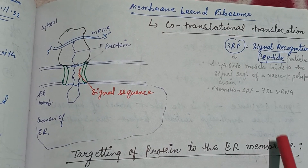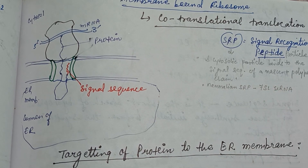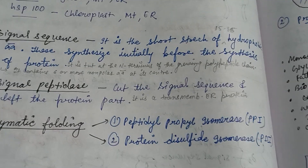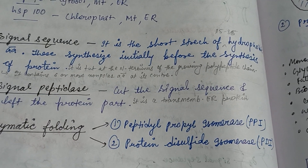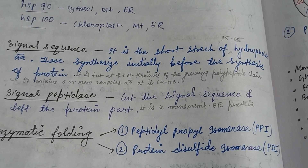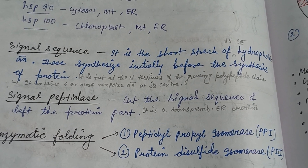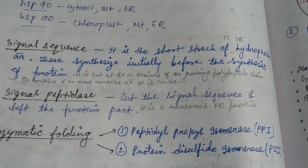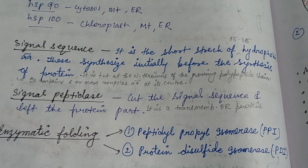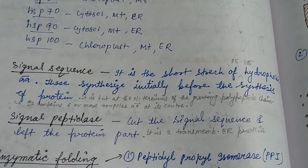SRP is a signal recognition particle — a cytosolic particle that binds to the signal sequence of a nascent polypeptide. In mammals, the SRP RNA is known as 7SL RNA. The signal sequence is a short stretch of 15 to 35 amino acids synthesized at the beginning of translation, present at the N-terminus of the growing polypeptide chain, and contains six or more non-polar amino acids at its center. Signal peptidase cleaves the signal sequence and releases the protein; it is a transmembrane ER protein.